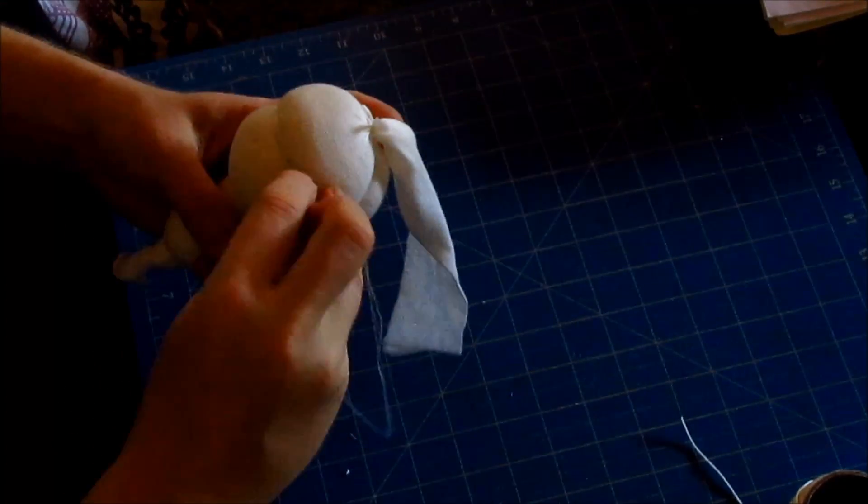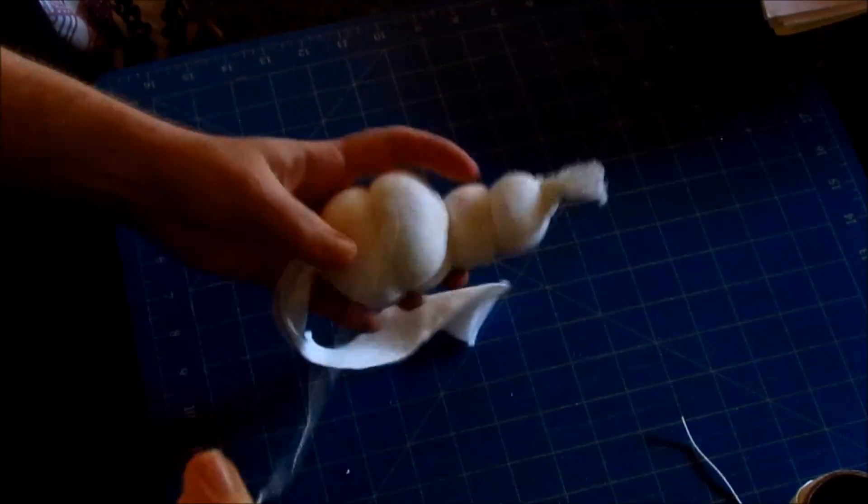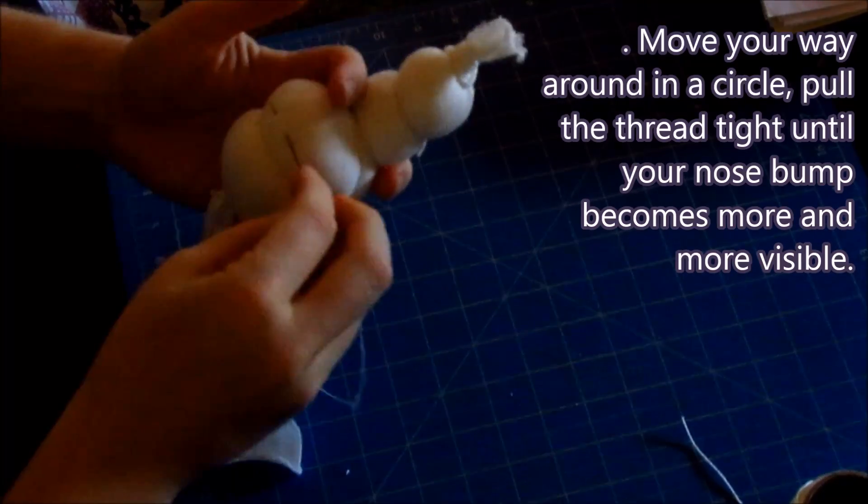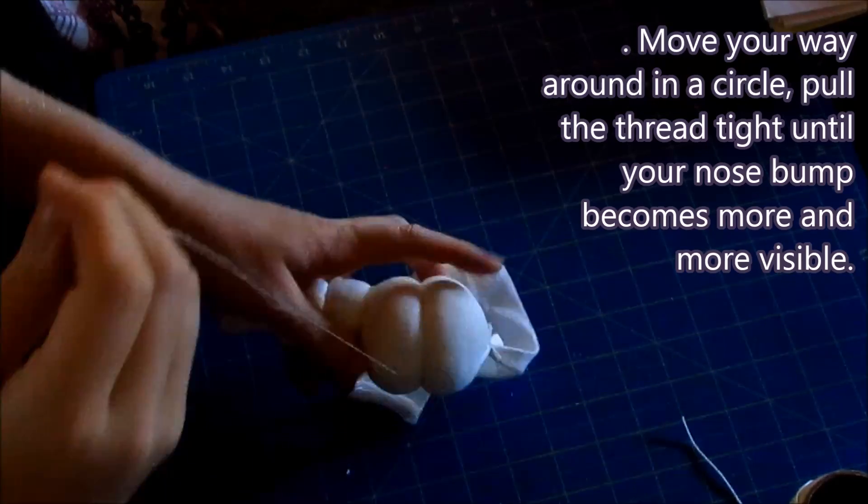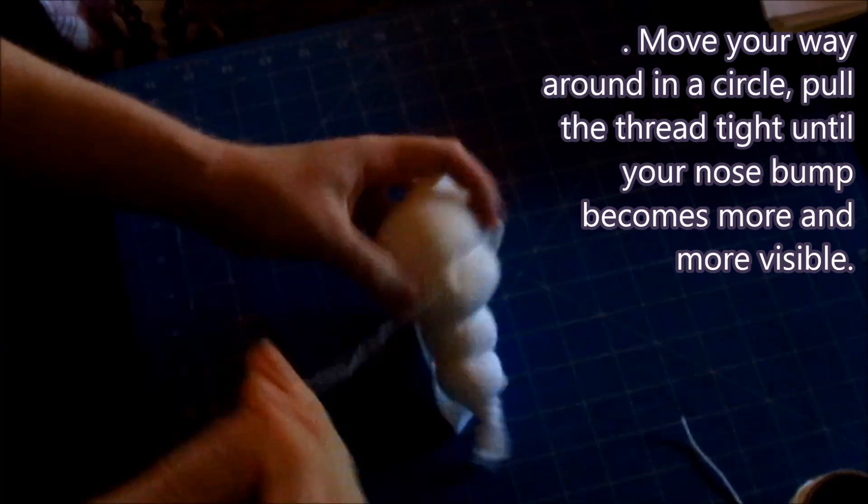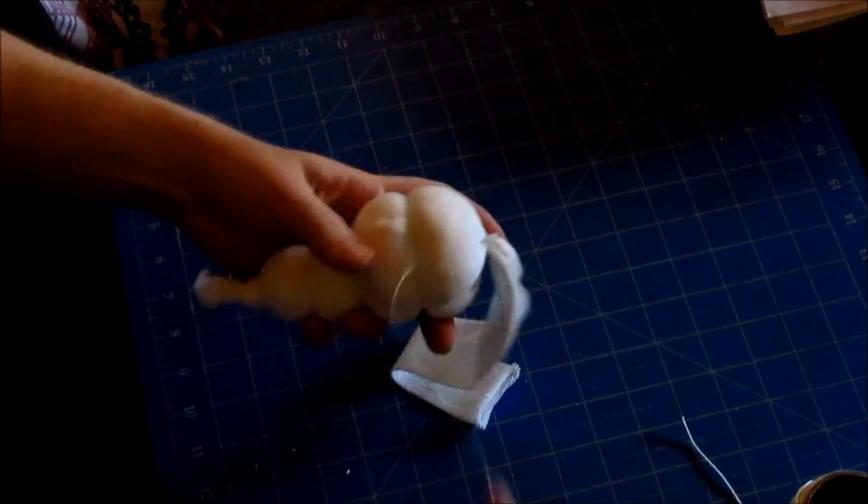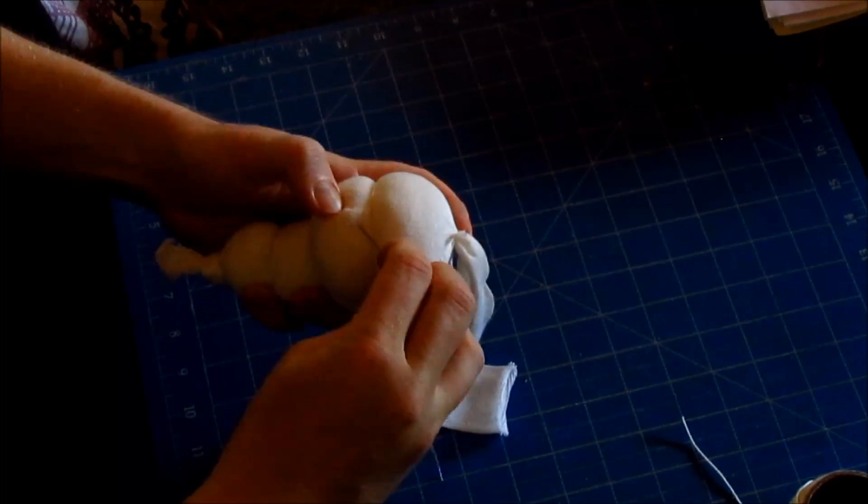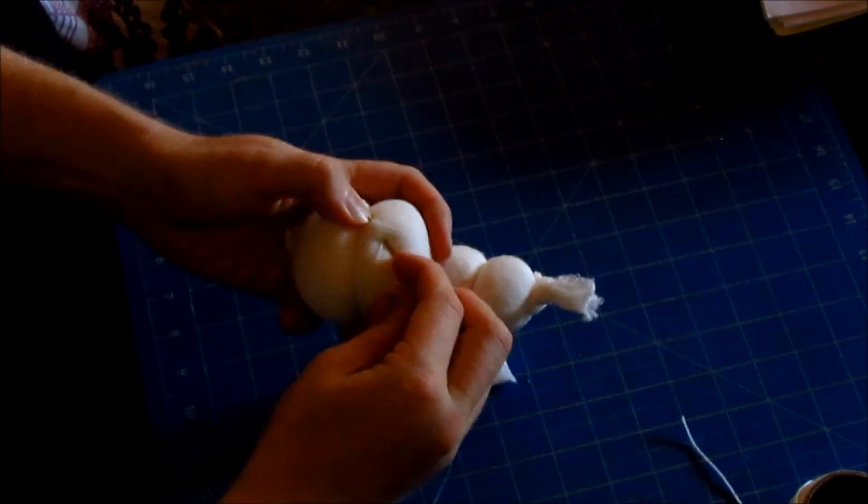Now determine where you would like the nose to be and then start and move your way around in a circle or clockwise, pulling the thread really tight until your nose bump becomes more and more visible. And once you are done with that...